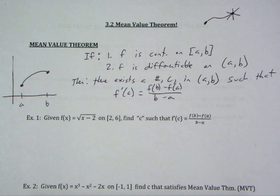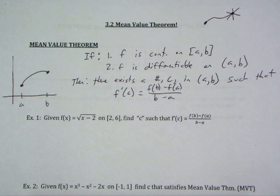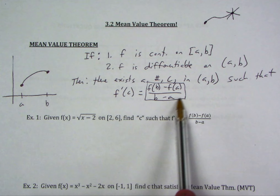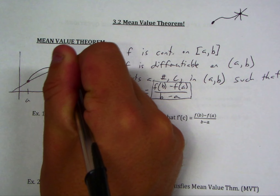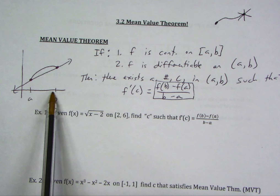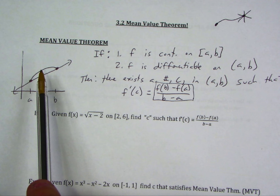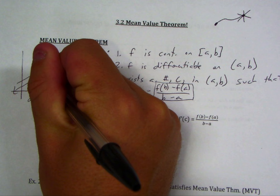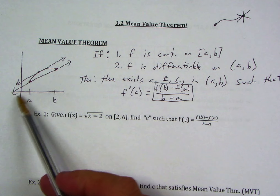I'd encourage you to think about what this is saying before I explain it. So far in this class, we've talked about instantaneous rate of change and average rate of change. This theorem connects those two ideas. The right-hand side — f of B minus f of A over B minus A — is average rate of change. It's the slope from one endpoint to the other, the slope that connects A and B.